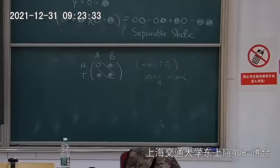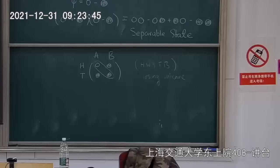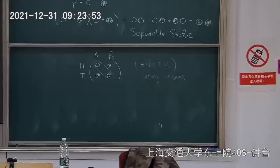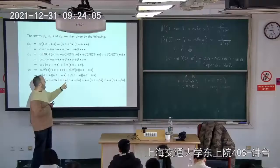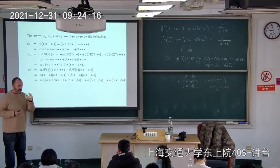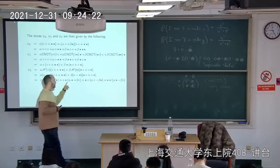Then Alice puts her first particle through a Hadamard gate. White becomes white+black and black becomes white−black. After doing the algebra and rewriting the state, we get: white-white·(alpha·white + beta·black) + white-black·(alpha·black + beta·white) + black-white·(alpha·white − beta·black) + black-black·(alpha·black − beta·white).